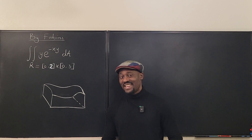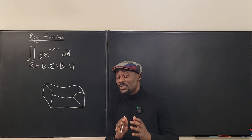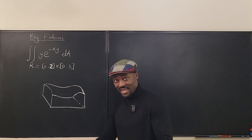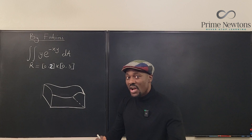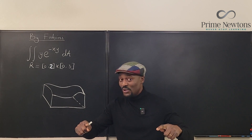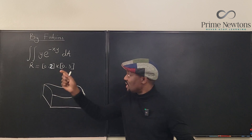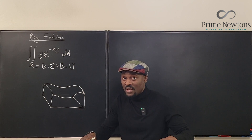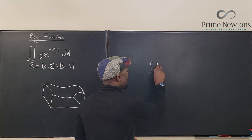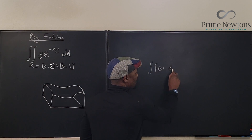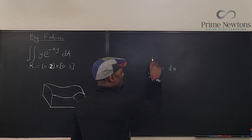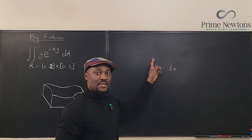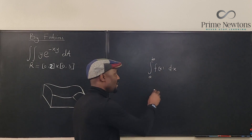Welcome to another video. We're going to look at how to use information like this to get the integral. We are not integrating over a line — we're not doing integration dx. We're doing integration dA. dA means it's over an area. So if I tell you to integrate f(x) dx from a to b, all I'm saying is we're going to start from a on the x-axis and move all the way to b and find the area under the curve.